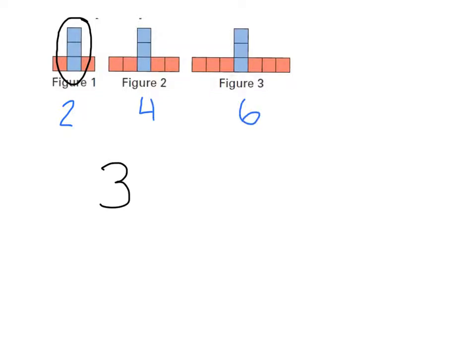I have to look for a connection and what I might notice is that one times two is two, two times two is four, and three times two is six. That means that the number of red blocks is two multiplied by the figure number, whatever that is.